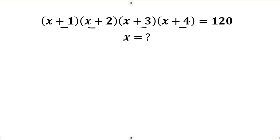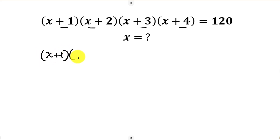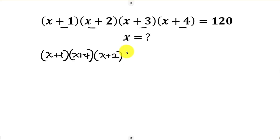So that means I'm going to be rearranging: this times this, which is (x+1)(x+4), and then (x+2)(x+3), and this is equal to 120.